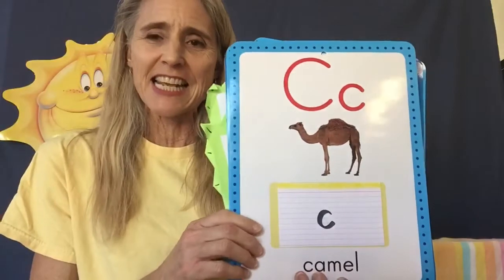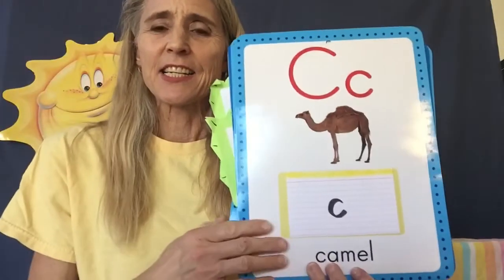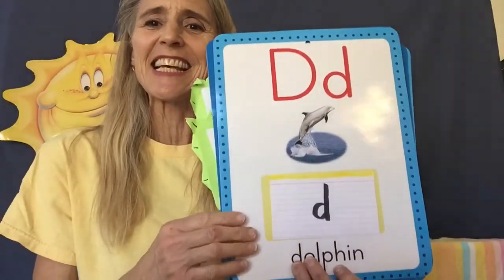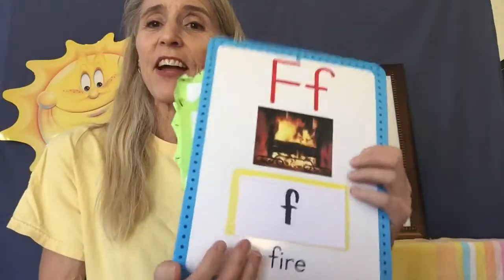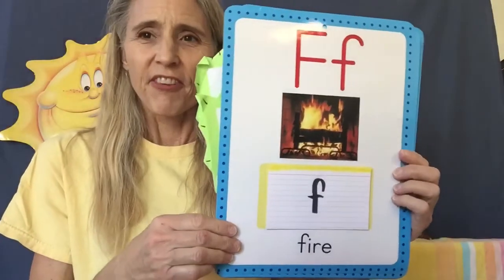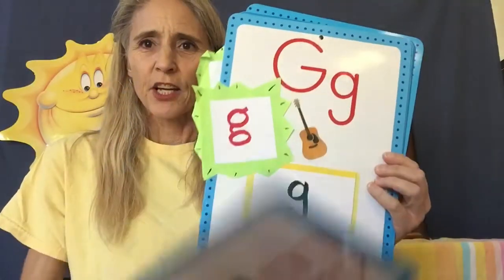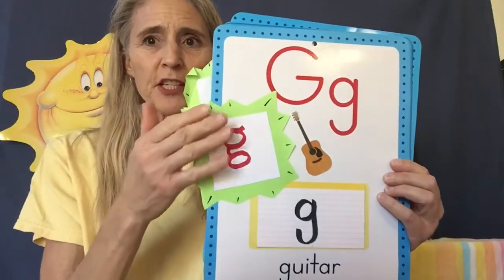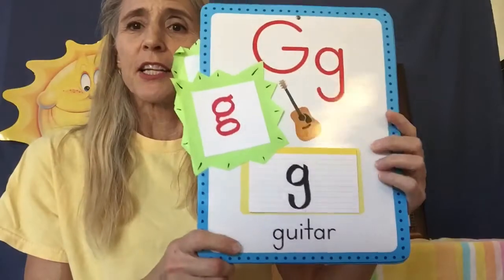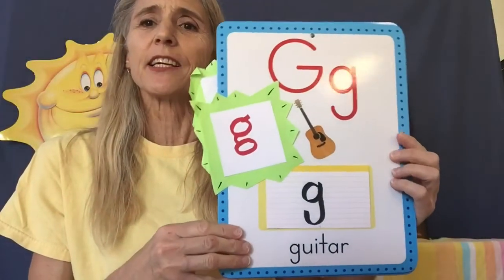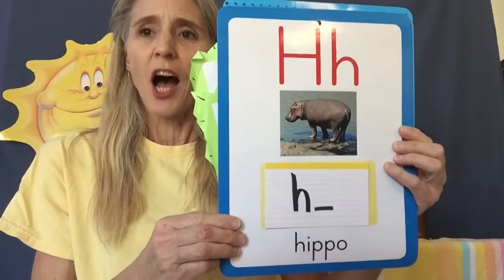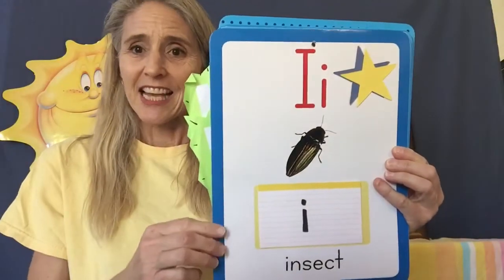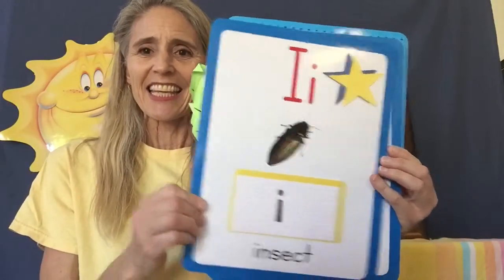Dolphin card D — d, d, d. Egg card E — eh, eh, eh. Fire card F — f, f, f. Oops. Guitar card G — g, g, g. Hippo card H — h, h, h. Insect card I — eh, eh, eh.